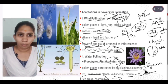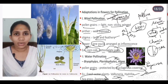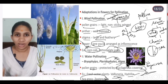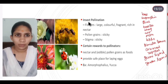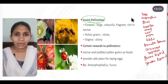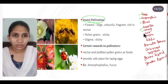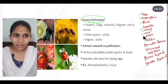Insect pollination is called entomophily. The most common insect pollinators are bees, butterflies, flies, beetles, wasps, ants, moths, and birds. Primates such as lemurs, and reptiles such as gecko lizards and garden lizards, also act as pollinators.